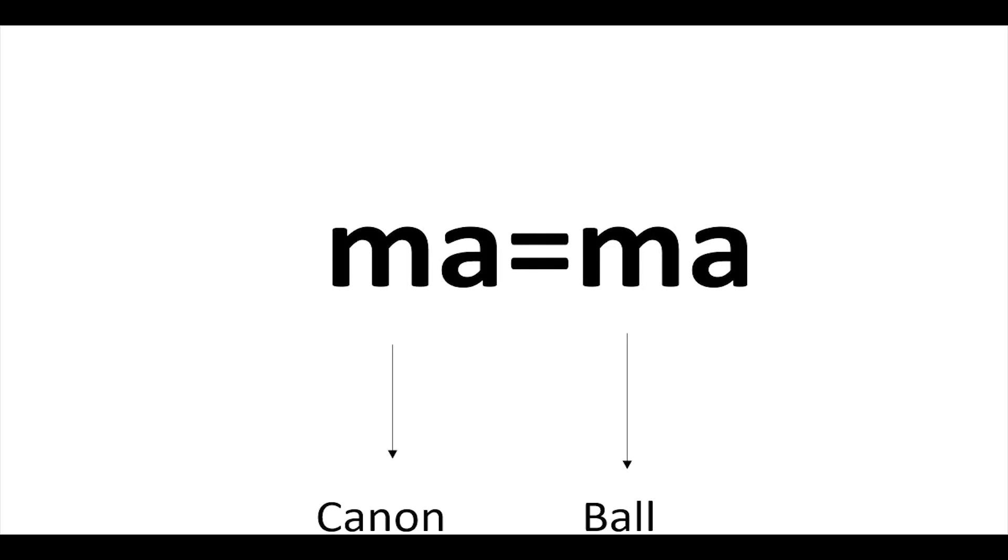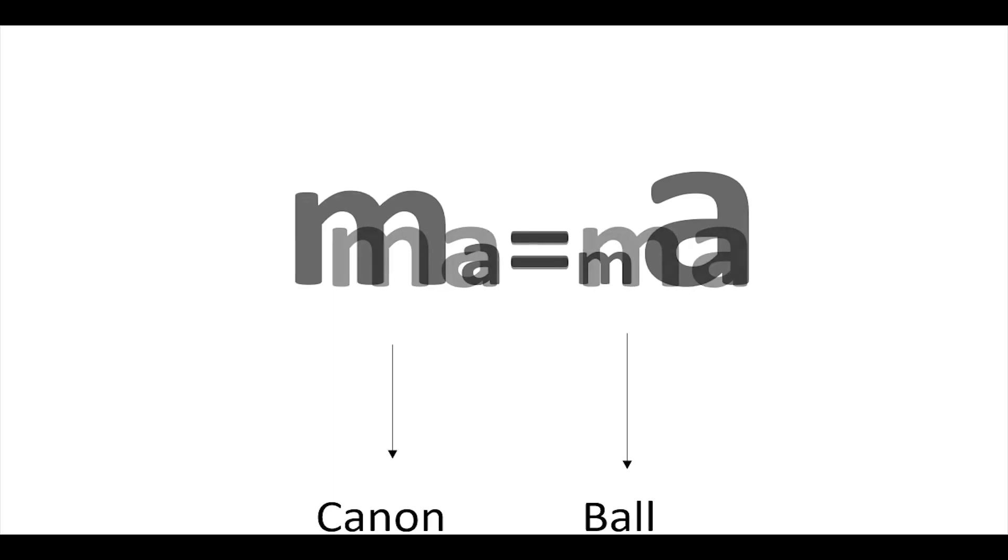And remember that F equals M A and their forces are the same, so M A equals M A. But the mass of the cannon is a lot bigger than the ball one. Thus, the acceleration of the ball is bigger than the cannon one.